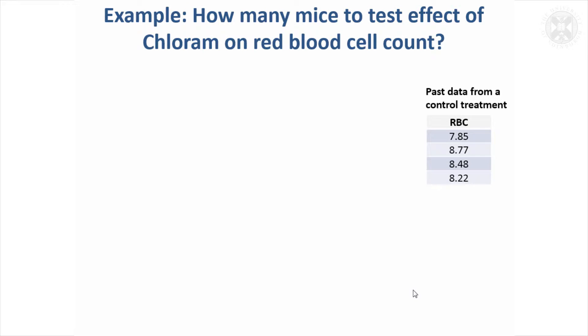I'll look at an example of setting up a new experiment for the design we were looking at in the last session, thinking about how many mice do we need to test the effect of an intervention, chlorum, on red blood cell counts.